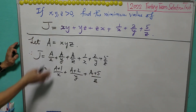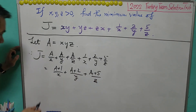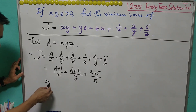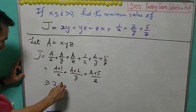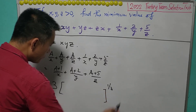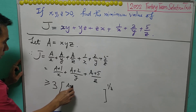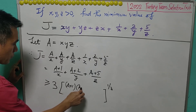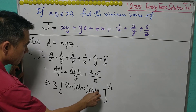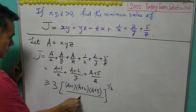Since X, Y, Z are all positive, each of the terms here is positive. We can use the GM inequality, and J is greater than or equal to 3 times the product of everything to the power of 1 over 3. That product equals (A plus 1)(A plus 2)(A plus 5) over XYZ, which equals A.